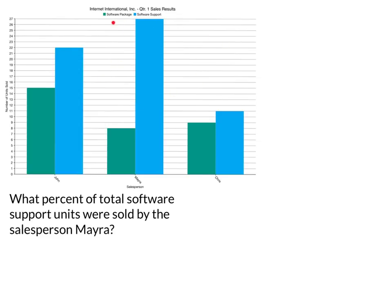Then you want to look at what they call the legend, which gives you what the colors mean and what they represent. So green here is software packages and blue here is software support.